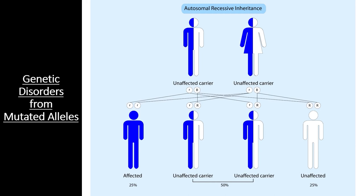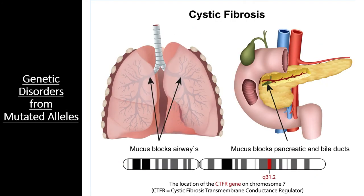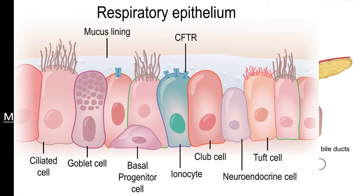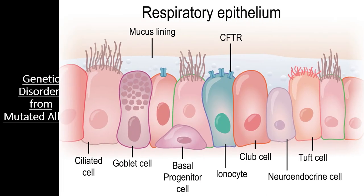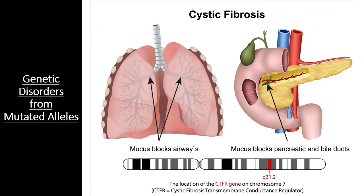A good example of an autosomal recessive disorder is cystic fibrosis. The affected gene normally codes for a protein involved with transporting chloride ions across cell membranes throughout the body. When both alleles for this gene produce dysfunctional versions of the protein, chloride ions build up in the intermembrane space and cause the formation of a thick mucus layer in the lungs, pancreas, and other body tissues, leading to difficulty breathing and blocked pancreatic ducts.